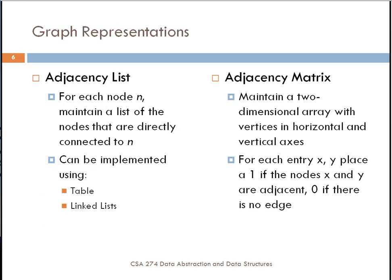With an adjacency list, for each node in the graph, you maintain a list of nodes that are directly connected to that node. In this case, you can implement it using a linked list or some kind of table. An adjacency matrix, on the other hand, is a two-dimensional array with vertices on the horizontal and vertical axes. For each entry (x, y) in the matrix, you have a 1 if nodes x and y are adjacent, and you have a 0 or some other value if there is no edge. A 1 in an adjacency matrix says that two nodes are directly connected, whereas some other number tells you other kinds of information about the graph. We'll see initially that a 0 means there's no edge, but we can use other values to tell us other things about the relationship between two vertices in a graph.